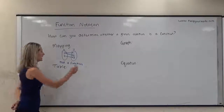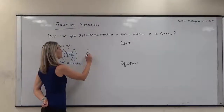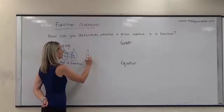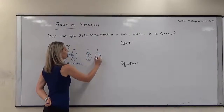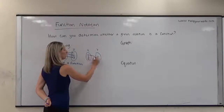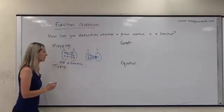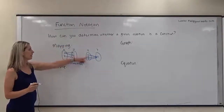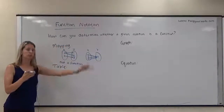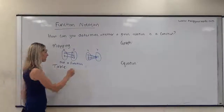On the flip side, let's say our inputs are four, five, and six, and our output is seven — and four maps to seven, five maps to seven, and six maps to seven. In this case, every input maps to exactly one output, so it is a function.